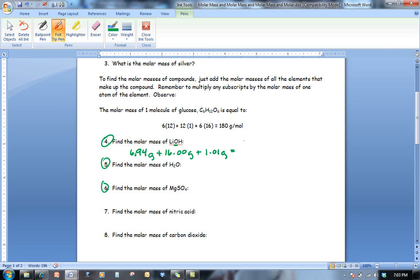In your calculator, all you're going to do is add 6.94 plus 16 plus 1.01. And you should get a total of 23.95 grams per mole. And this is your answer.